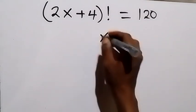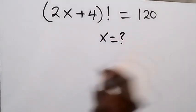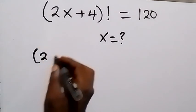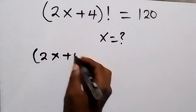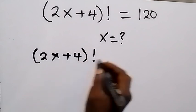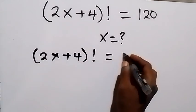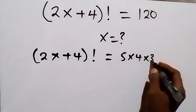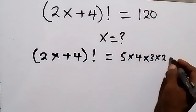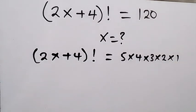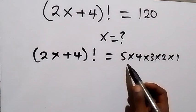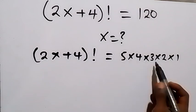From here we can rewrite this as (2x+4)! equals to 5 times 4 times 3 times 2 times 1. And here on the right hand side, 5×4×3×2×1 gives us 120.